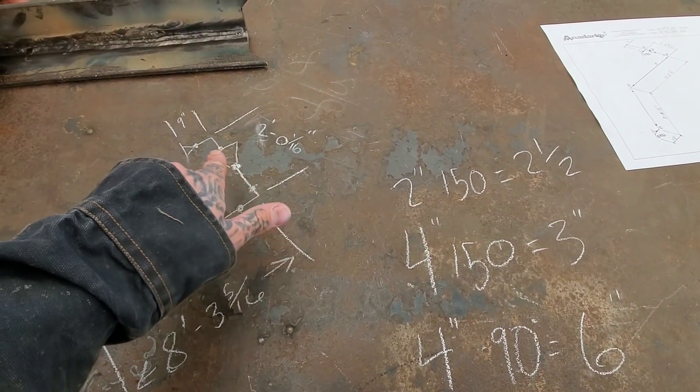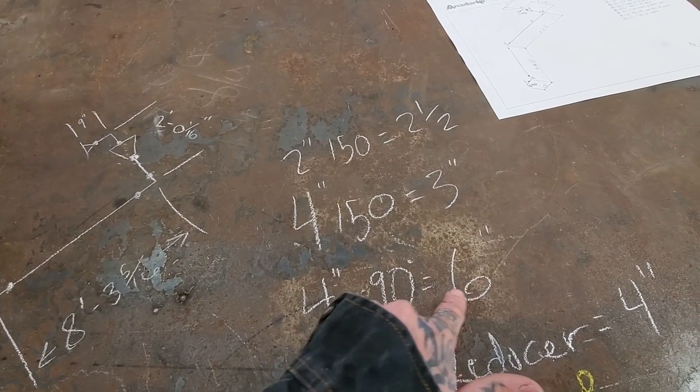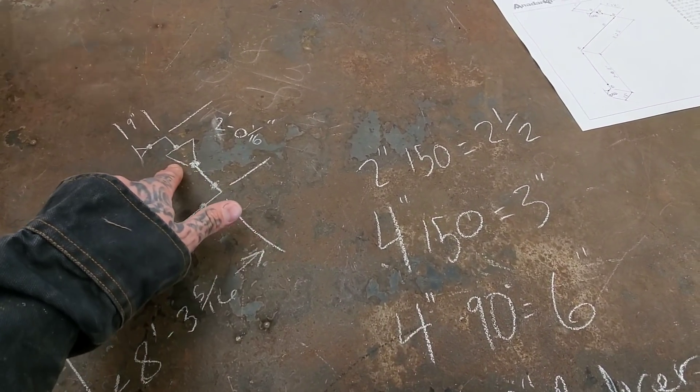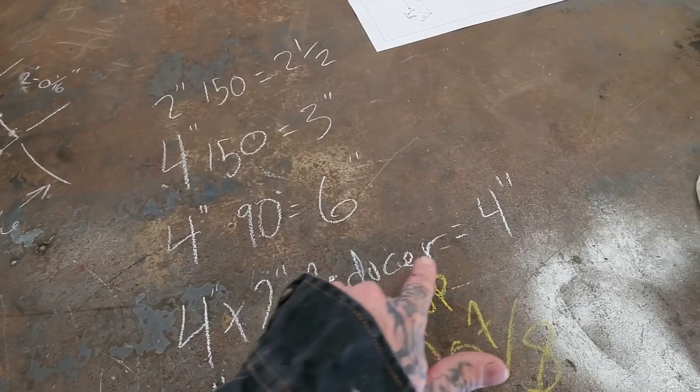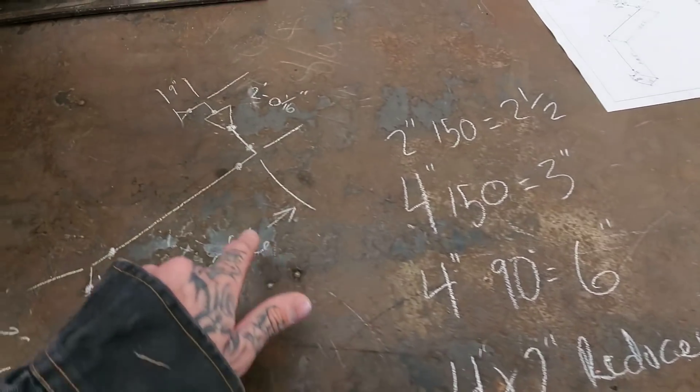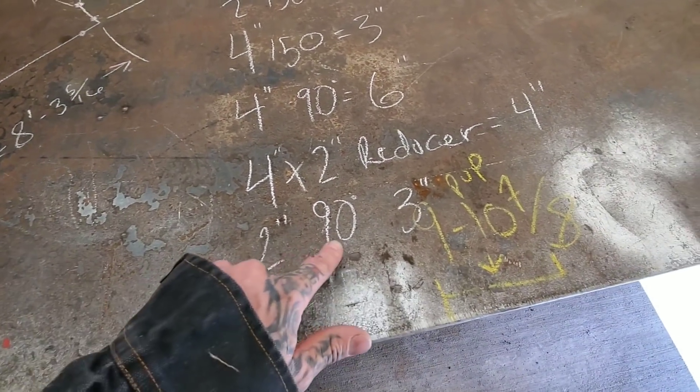Next up is a four inch long radius 90 which is six inches in my blue book. Now remember I said long radius. This is a four by two reducer and in my book it says that it equals four inches. Next up is a two inch 90, the two inch long radius 90 is three inches.